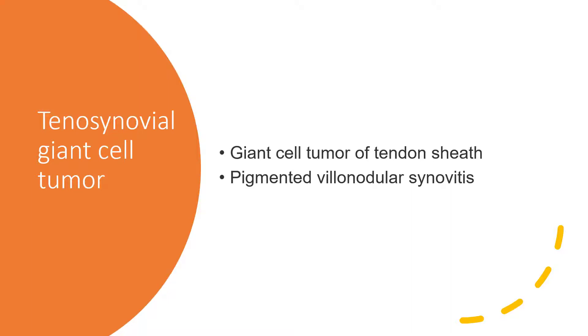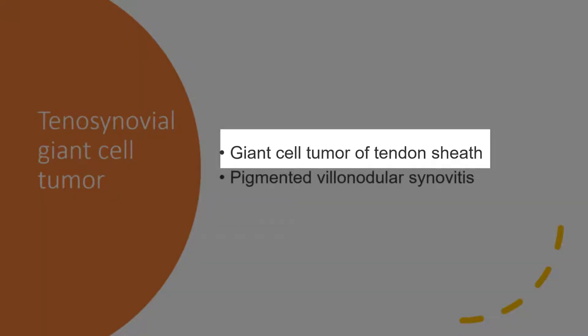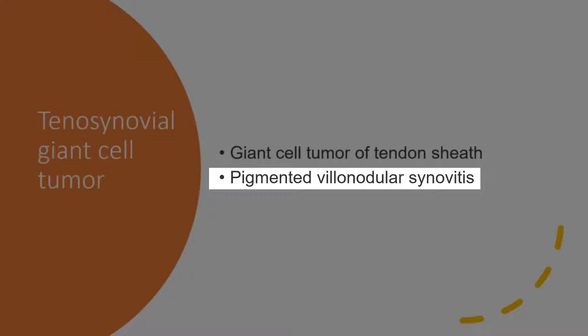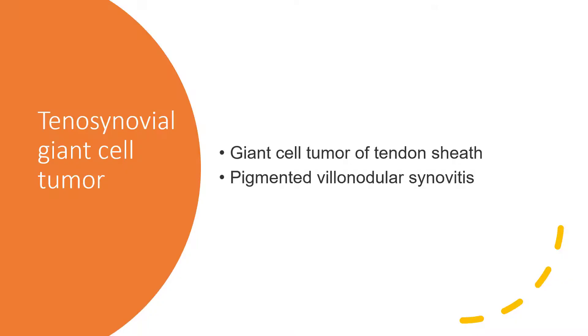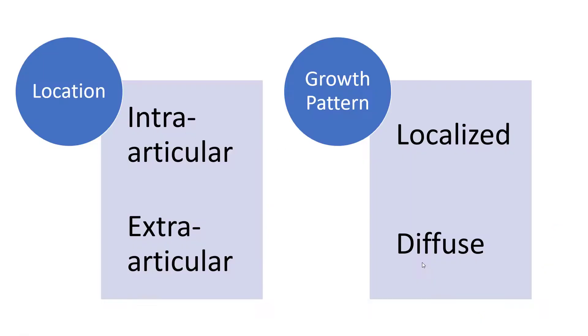This is a very short talk on tenosynovial giant cell tumors. These tumors used to be called giant cell tumors of the tendon sheath when they occurred on fingers, and pigmented villonodular synovitis in large joints such as the knee. Both terms are now frowned upon, but you'll catch me using them in parenthesis. Today we divide them based on either location or growth pattern.